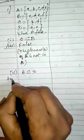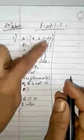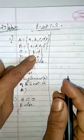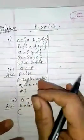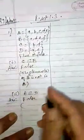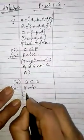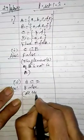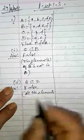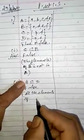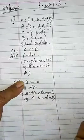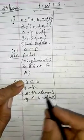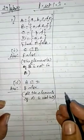So write the answer: False. For the reason, we didn't check the other elements at all. In the previous problem there were only two elements so we checked those. Here, other elements may or may not be there. So we write a general statement: all the elements of set A are not in set D.